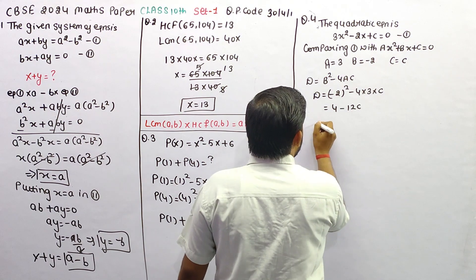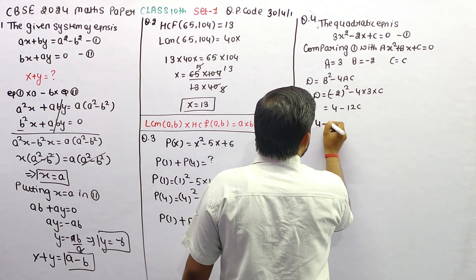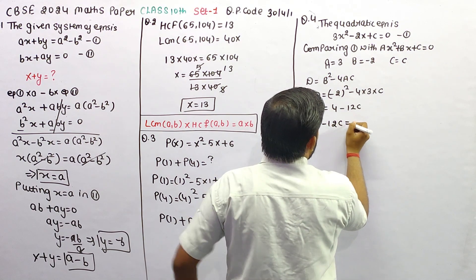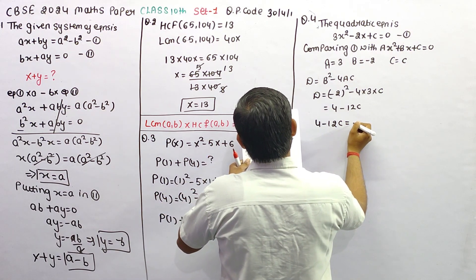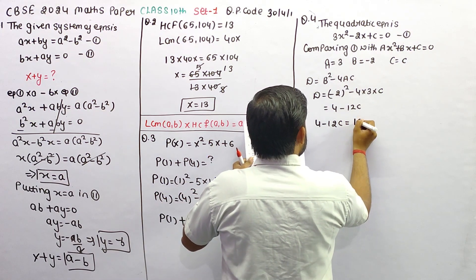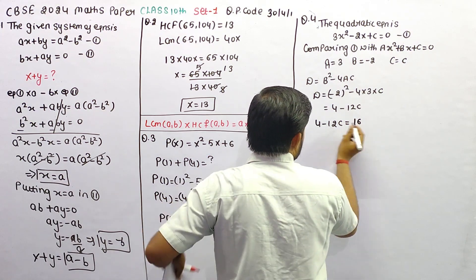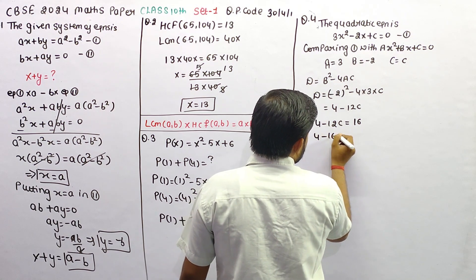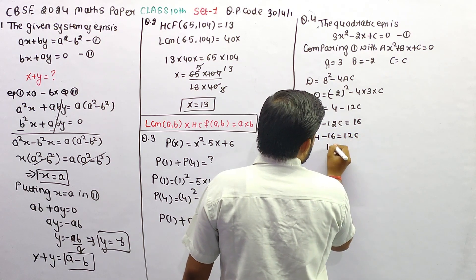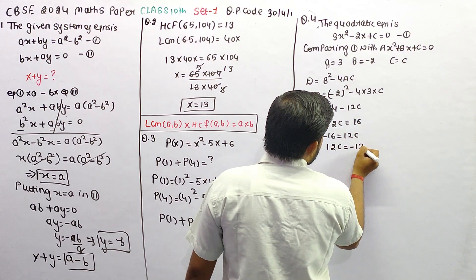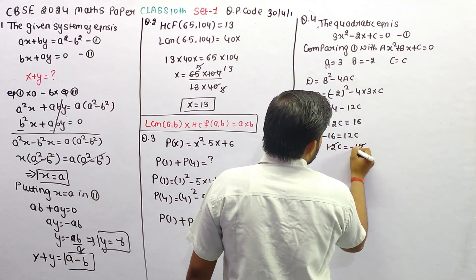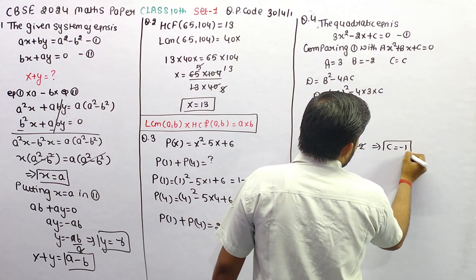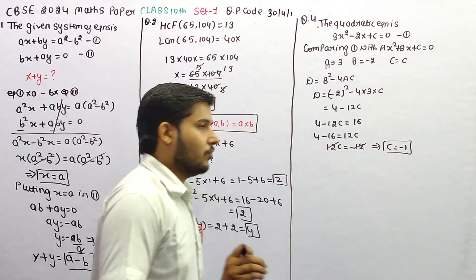तो दोनों discriminant को compare कर लेता हूँ। 4 minus 12c is equal to 16 (discriminant दे रखा है)। इसको solve करते हैं: 4 minus 16 is equal to 12c, तो 12c is equal to minus 12, which implies c की value minus 1 है।